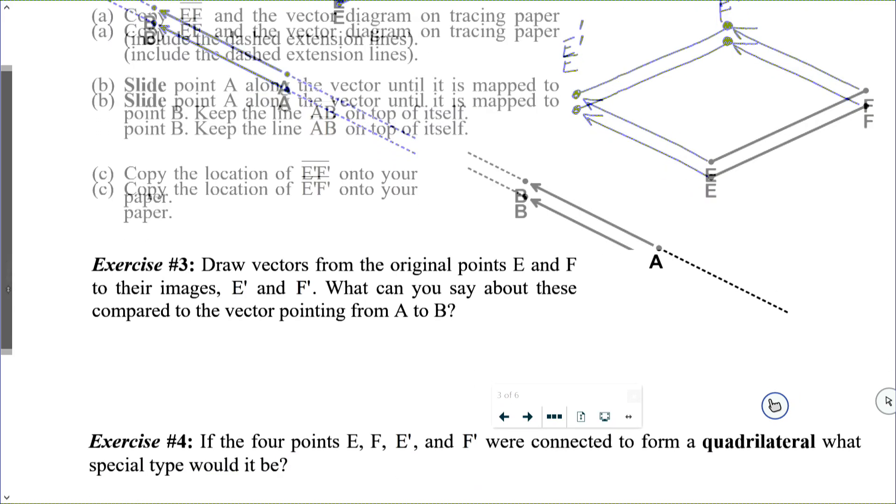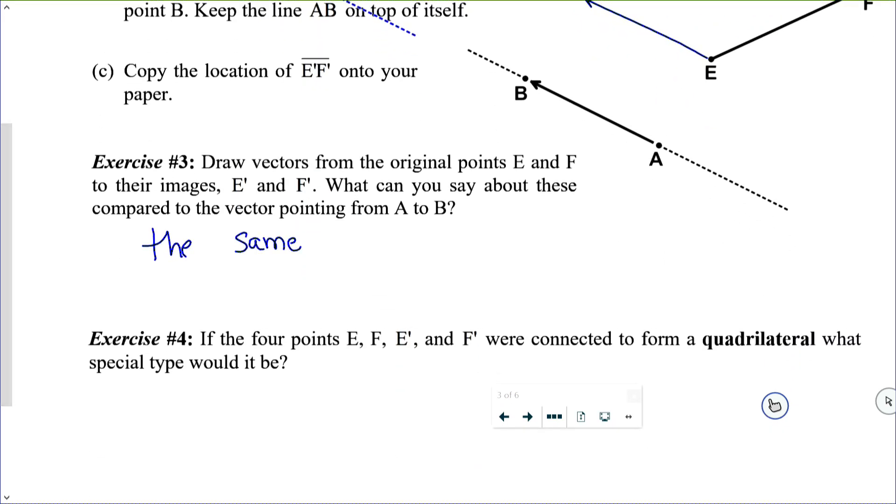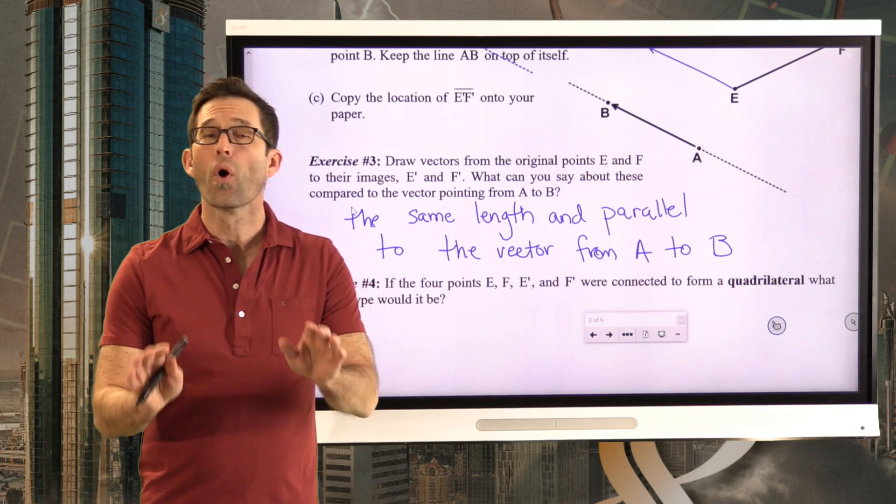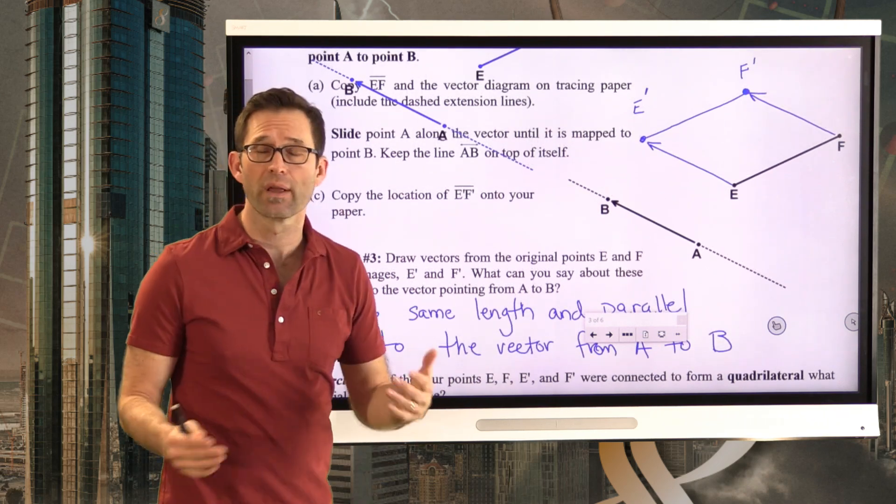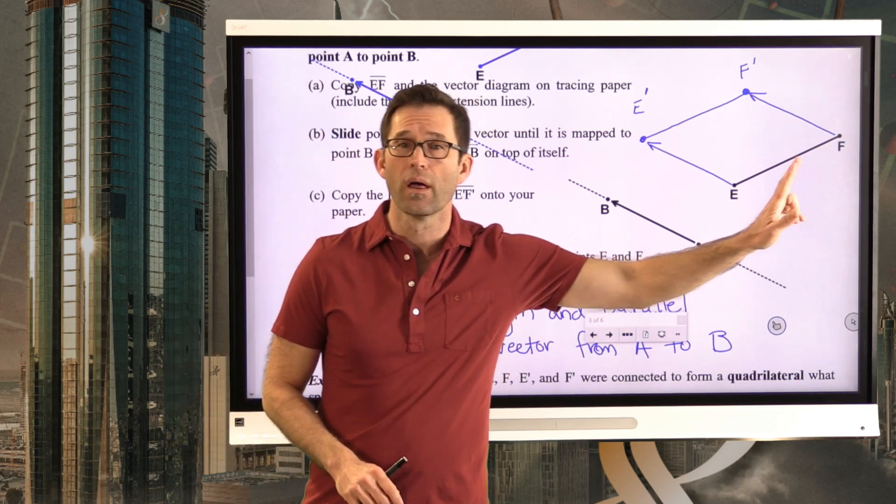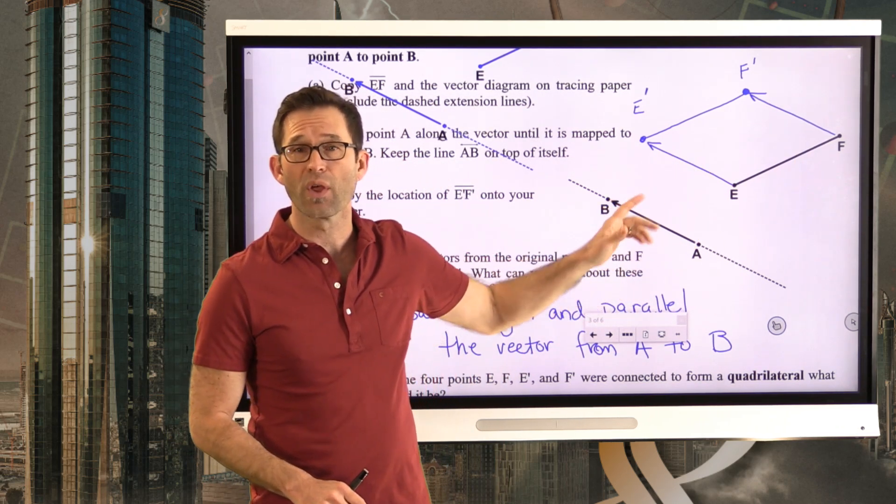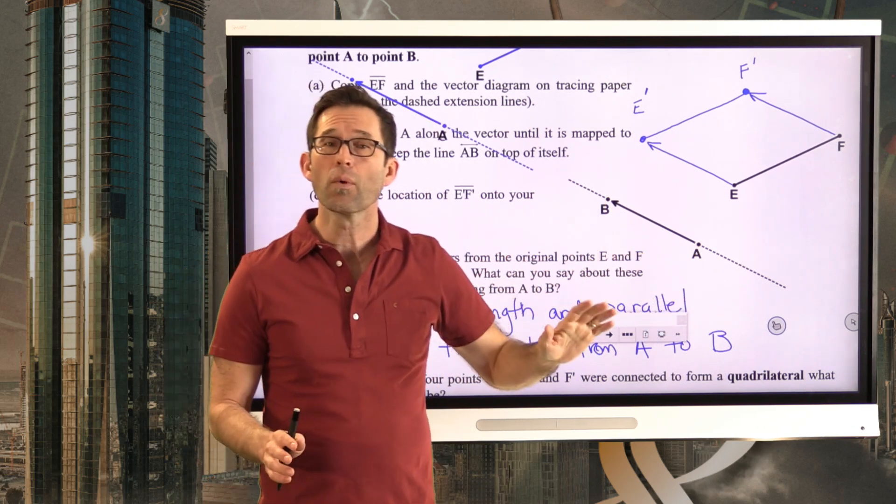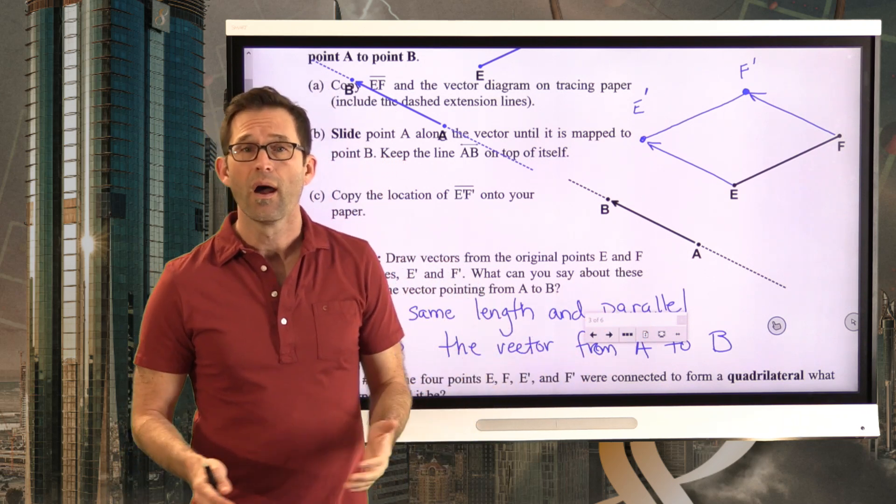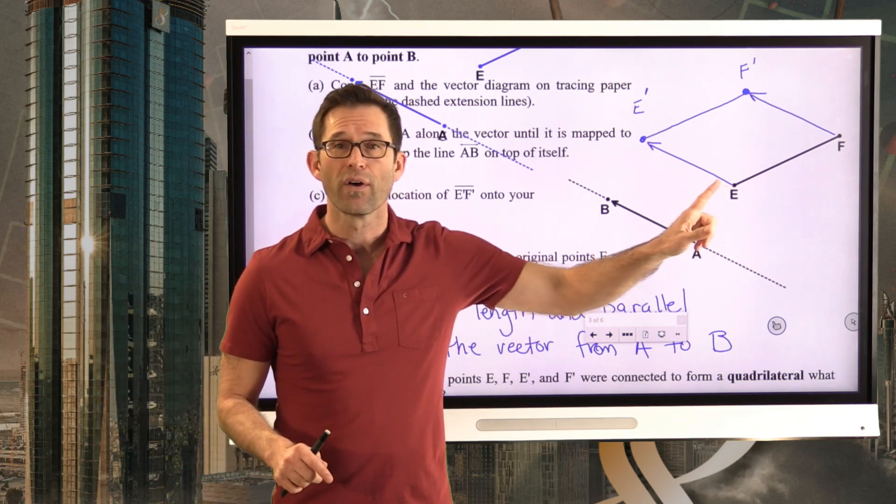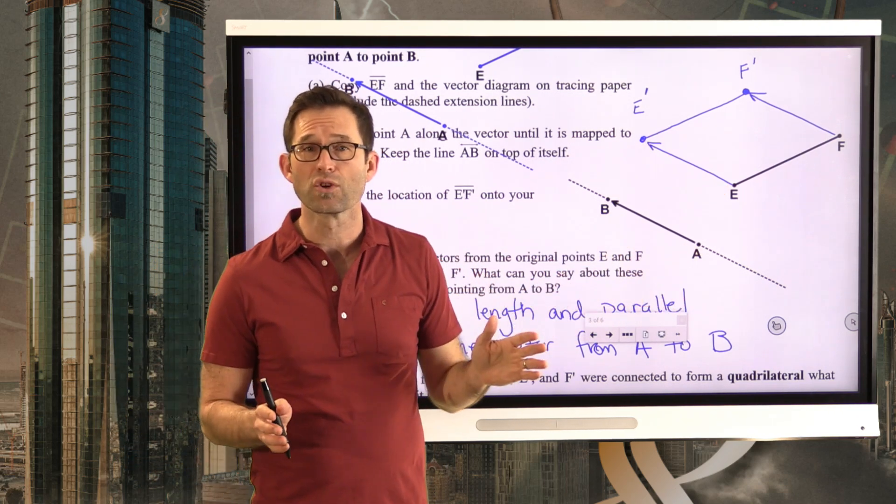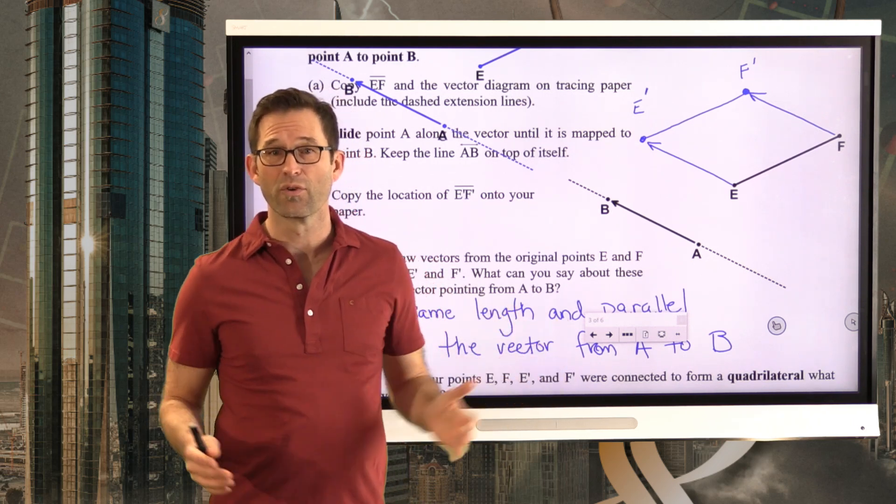So they are the same length and parallel to the vector from A to B. And that truly is the whole point. The whole point of using a vector in order to think about a translation is to basically say, hey look, I want to take all the points along this line segment EF and I want to slide them a certain distance. How far is that distance? Oh, from A to B. And I want to slide them all in the same direction. And how do I think about direction? I think about direction in terms of parallelism. In terms of, well look, if I keep this thing parallel to this thing, then it's the same direction. If they were not parallel, they'd eventually intersect and then they'd be going in kind of different directions.